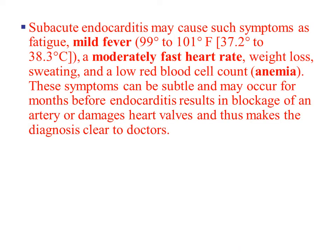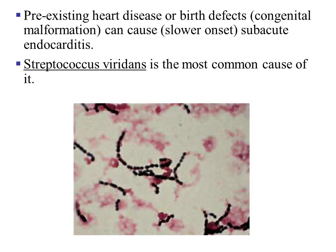Now we will look at sub-acute endocarditis — this one is slow in progression. You will have a mild fever, moderately fast heart rate, weight loss, sweating, and anemia. Pre-existing heart disease or birth defects such as a congenital malformation can cause sub-acute endocarditis. One classical example of the etiology of sub-acute endocarditis is Streptococcus viridans — it is the most common culprit in causing this infection.